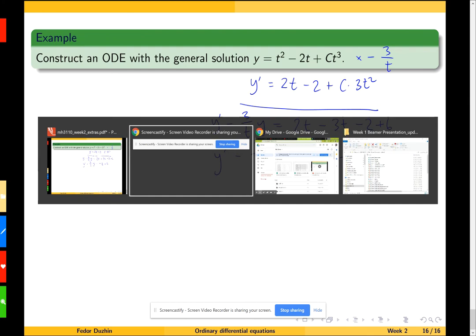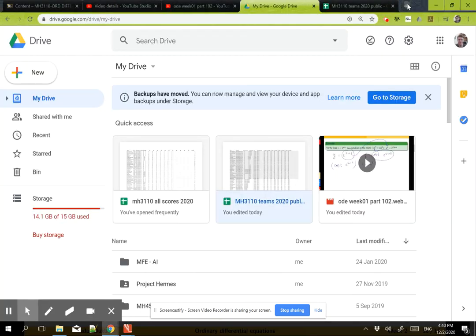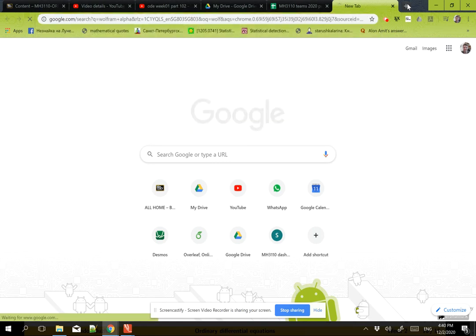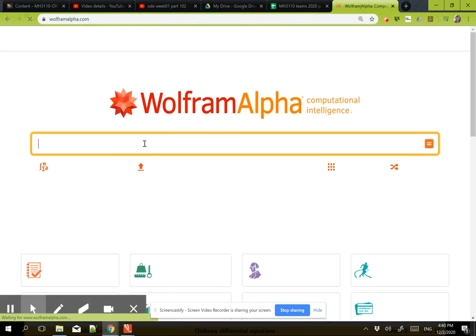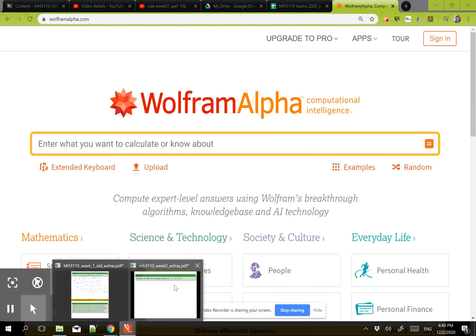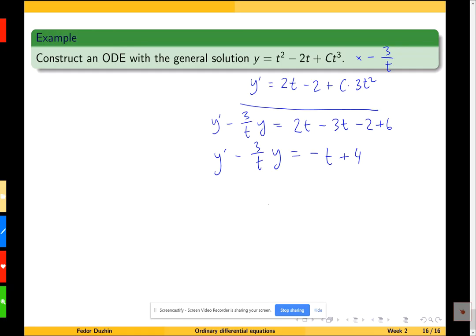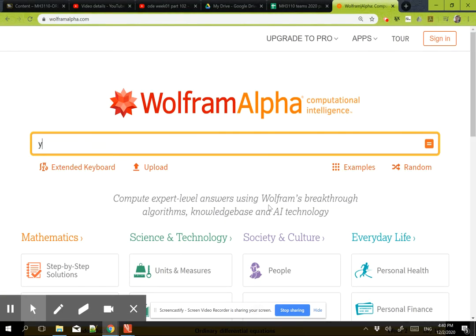In order to verify, we need to check, and the easiest thing to do is to do it in Wolfram Alpha. This is a linear differential equation, so I hope you know how to solve it. So y' - 3/t times y = -t + 4. Let's see if this is really the answer.